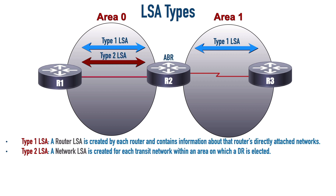We're going to have a Type 2 LSA to represent every network segment within an area if that segment meets two conditions. Condition one is the network has to be a transit network - interconnecting a couple of OSPF-speaking routers, not just going off to a switch connecting to end users. The other criterion is that there be a DR elected on that link. Assuming we have a Gig Ethernet interface coming out of R1 going over to R2, a DR would be elected there. But on a point-to-point WAN segment like we have between R2 and R3, we're not going to elect a DR. So there's no Type 2 LSA to represent that link between R2 and R3.